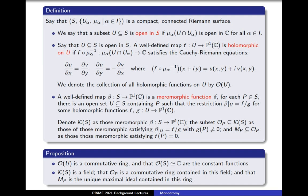The Cauchy-Riemann equations say that the partial derivative of U with respect to X equals the partial derivative of V with respect to Y, and the partial derivative of U with respect to Y equals minus the partial derivative of V with respect to X, where F composed with mu_alpha inverse of (X + iY) is written in the form U(X,Y) + i·V(X,Y). We denote the collection of all holomorphic functions on U by O(U).